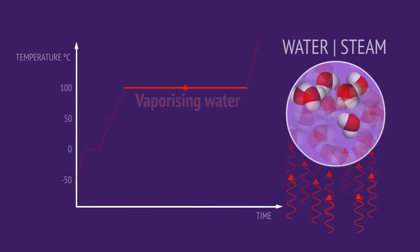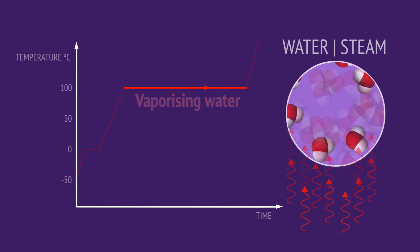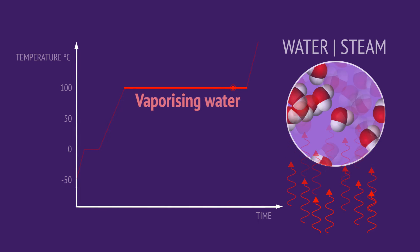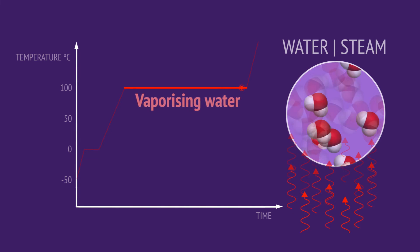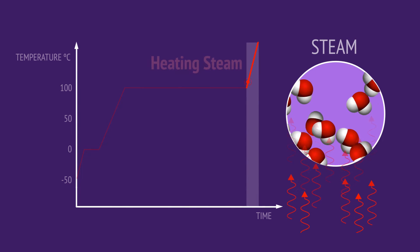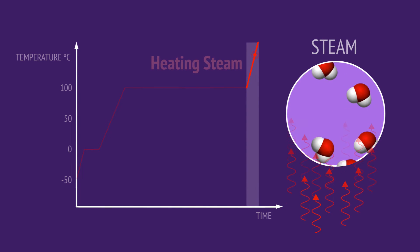This longer section of the graph shows that a relatively large amount of heat is required to boil water into steam. At this point, further heat will increase the temperature of the steam.